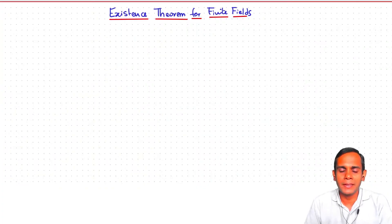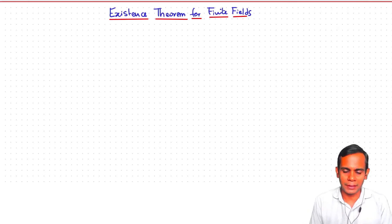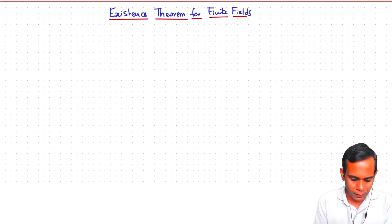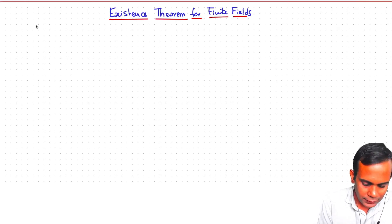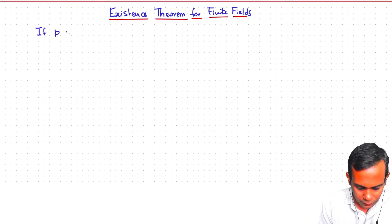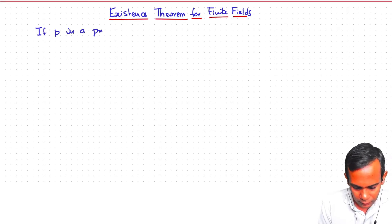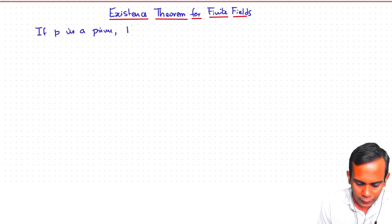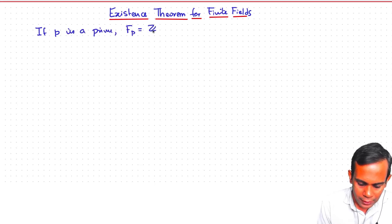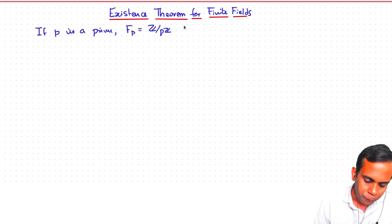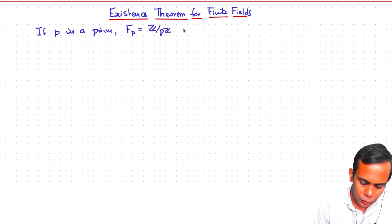What are the possible cardinalities for finite fields? Firstly, if p is a prime number, then you can look at the finite field Z mod pZ. We know that that is a field — it is a field of order p.